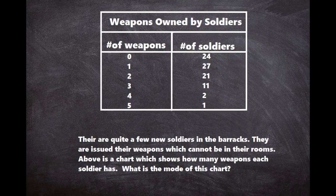That is not to be confused with the mean, which is the average. To get the mean of this set you would have to add up all the occurrences — 24 zeros, 27 ones, 21 twos, 11 threes, 2 fours, and 1 five — and then divide by the total number of soldiers. That would give you the average number of weapons for the set. The range would be from zero to five.